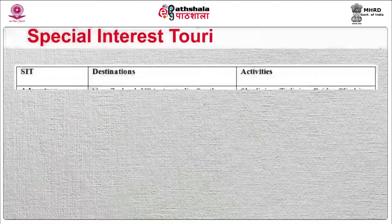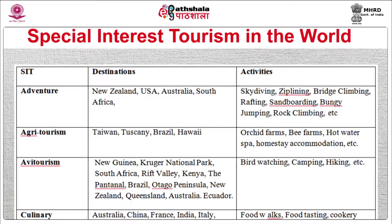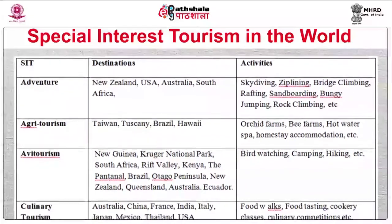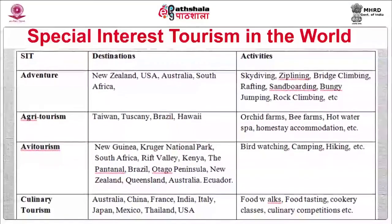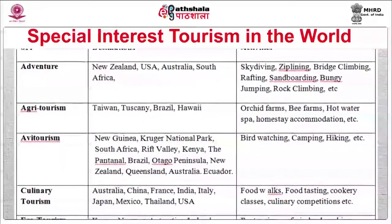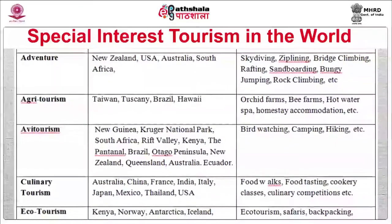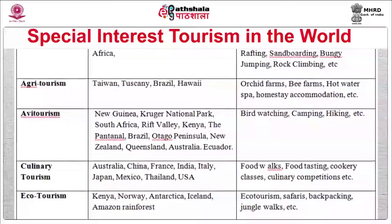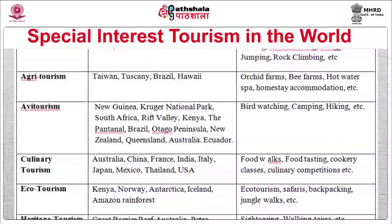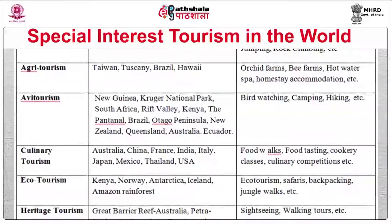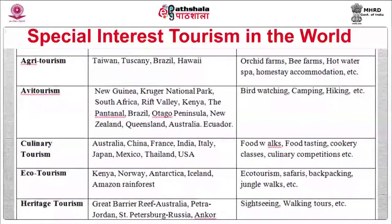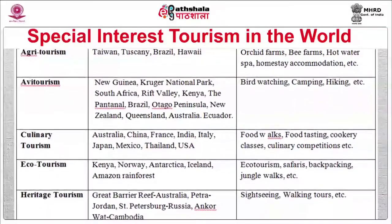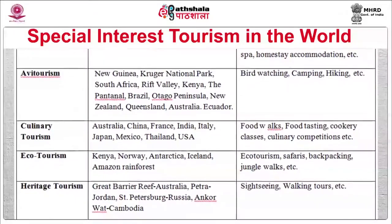For special interest tourism destinations in the world: adventure tourism is popular in New Zealand, USA, Australia, and South Africa with activities like skydiving, zip-lining, bridge climbing, bungee jumping, rafting, sandboarding, and rock climbing. For agritourism, Taiwan, Brazil, and Hawaii are notable. For bird watching, New Guinea, Kruger National Park in South Africa, Rift Valley in Kenya, New Zealand, Queensland in Australia, and Ecuador are famous, with activities like bird marching, camping, and hiking. For culinary tourism, Australia, China, France, India, Italy, Japan, Mexico, Thailand, and the USA are famous destinations offering food walks, food tasting, cookery classes, and culinary competitions.